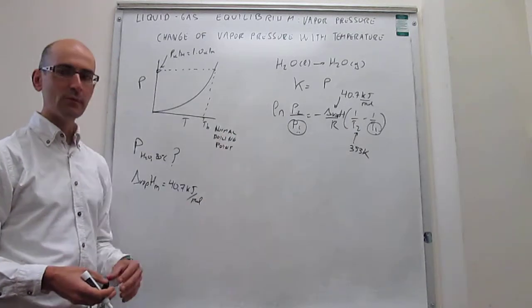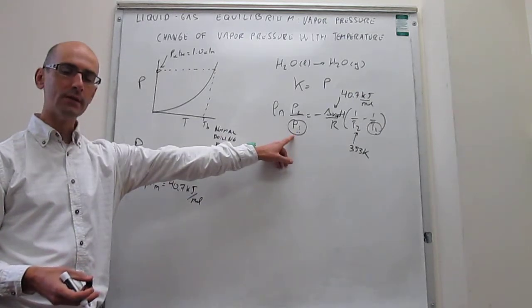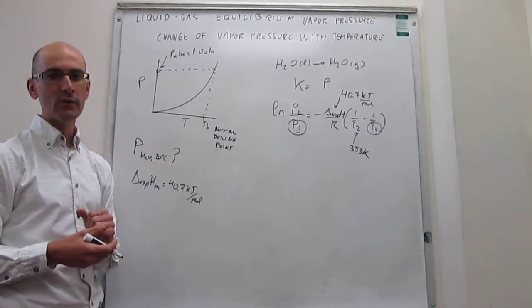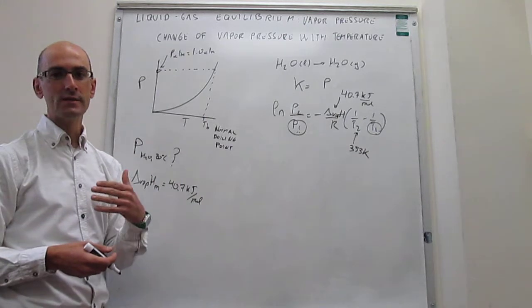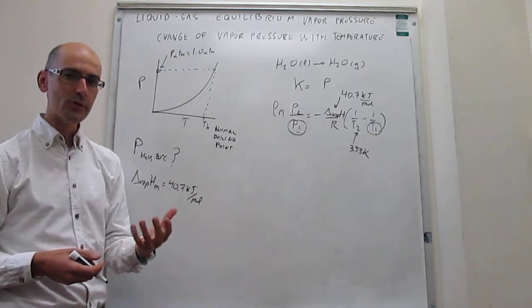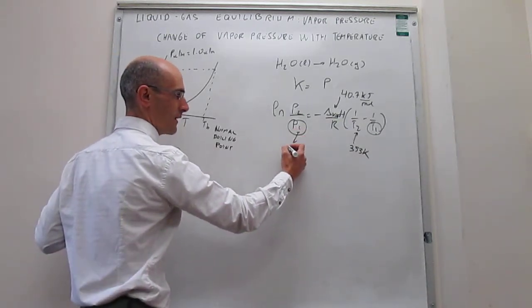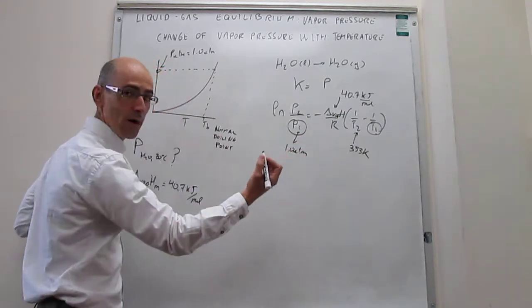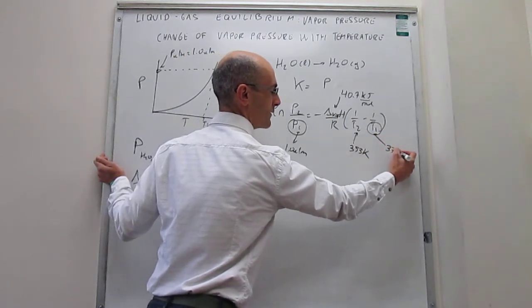Well, it turns out that for this type of problems, you actually always know one point, and that is the normal boiling point. The definition of the normal boiling point is the temperature at which the vapor pressure of the liquid equals the external pressure or the atmospheric pressure. So in this case, what we actually know is that this reaches one atmosphere, which is the external pressure for water. The normal boiling point is 100 Celsius, which would be 373 Kelvin.